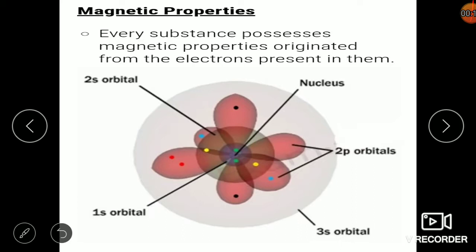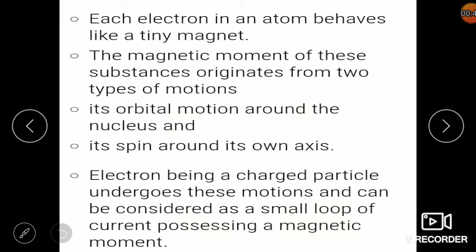Every substance possesses subatomic particles: electrons, protons, and neutrons. The magnetic properties of solids come from the subatomic particle electrons. Since electrons present in the atom orient in different directions, in different orbitals around the nucleus, they create an electrical loop, and that loop at its perpendicular direction generates a magnetic field. So basically, in the atom, electrons are the ones that create the magnetic property in some solids.